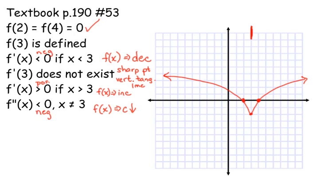f of 2 equals f of 4 equals 0 — we're good, we go through those two points. f of 3 is defined — I have a point there, it's at negative 2. Yours could be at negative 1 or way down somewhere else; that's where there's some wiggle room. f prime of x is less than 0 for x less than 3, so my function is decreasing to the left of 3. The derivative does not exist at 3 — I have a sharp point. f prime is positive for x greater than 3, so my function is increasing to the right of 3. And the second derivative is always negative except at 3 where it's not defined, so my function is always concave down.